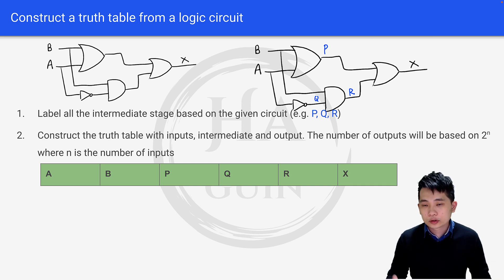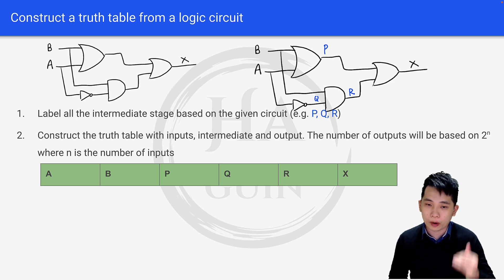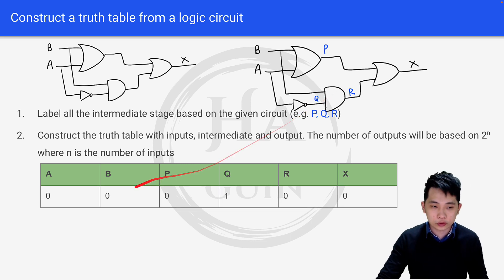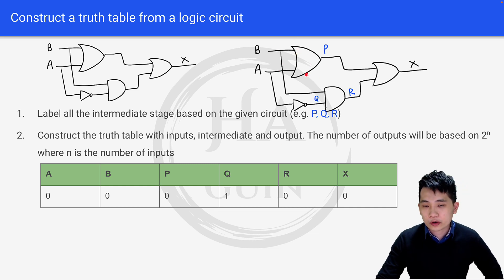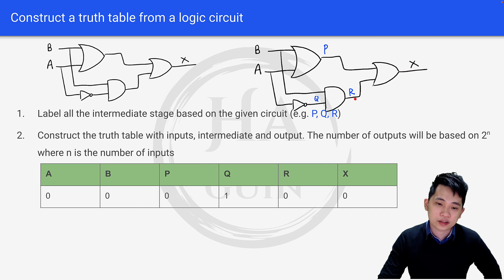For A and B inputs, since we have 4 rows, we go through 0, 1, 2, and 3 in binary. If you don't know binary, check out my other video. Starting with row 0: A=0, B=0. A and B through an OR gate gives P=0. Q is the inverse of A, which is 1. R takes Q and B as input: 0 and 1 through an AND gate gives 0. X takes P and R as input: 0 and 0 through an OR gate gives X=0.